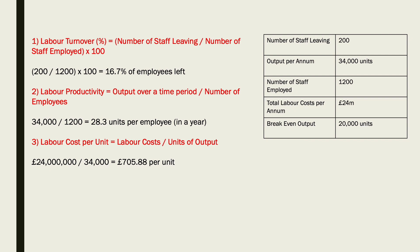Number three: labour costs per unit equals labour costs divided by units of output. The total labour costs were £24 million, divided by 34,000 units made over the course of a year, which means the labour cost per unit was £705.88. Hope that helps. See you in the next session.